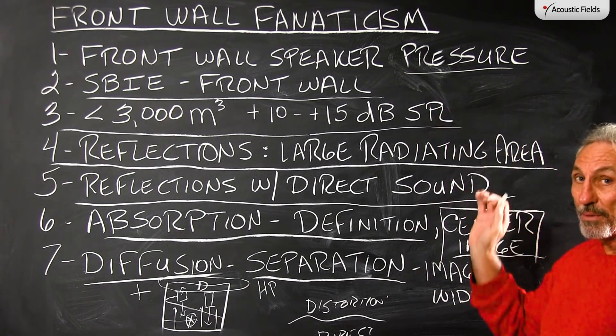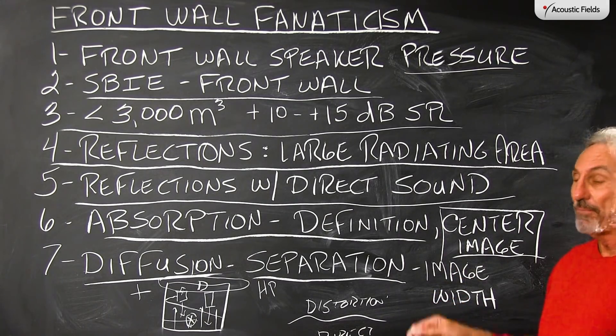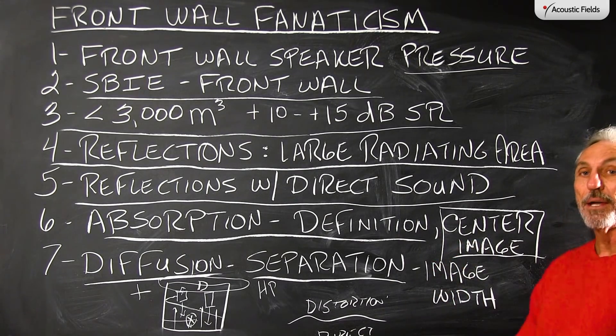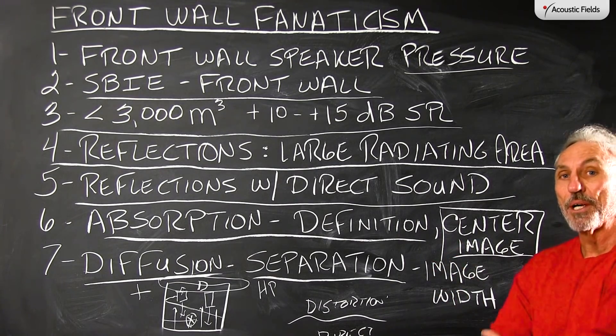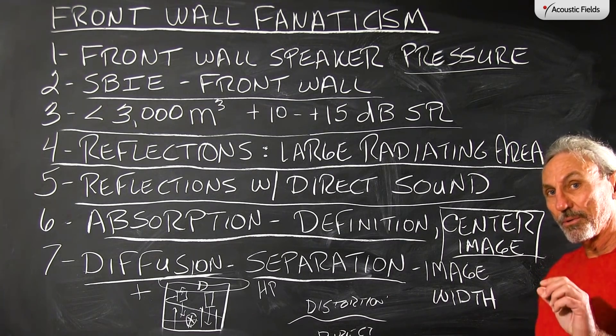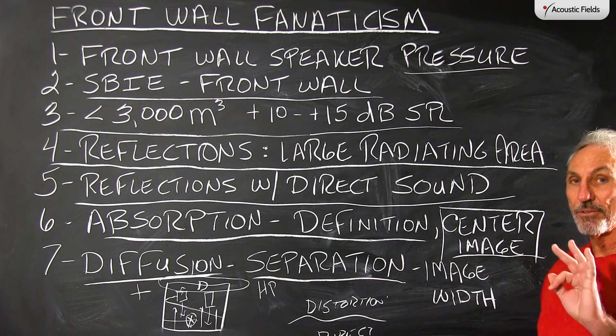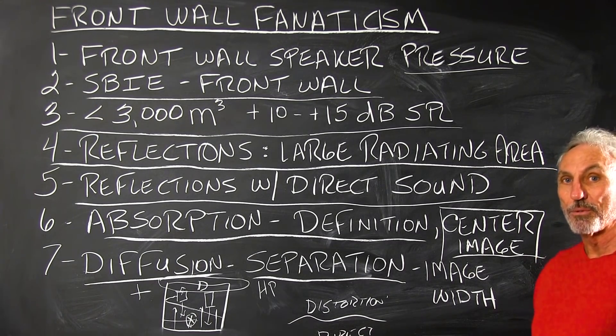So front wall — two main issues: pressure and reflections. We have to manage them and make sure we get a nice balance between the pressure, the reflections, and the direct sound. Three variables we have to consider.